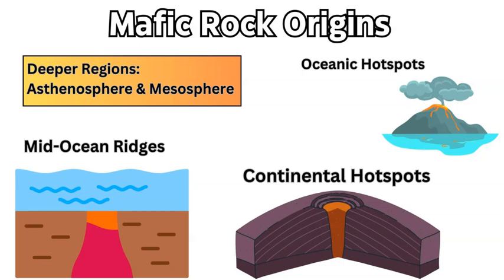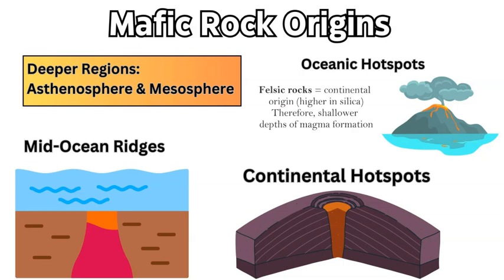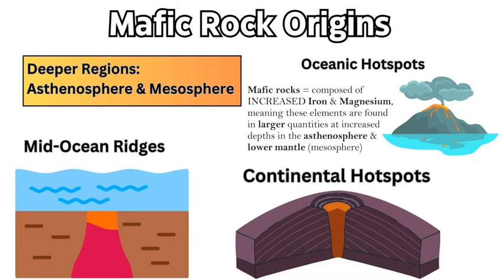Mafic rocks have a specific origin due to their composition and characteristics. Felsic rocks are mostly continental-based, derived from rock melting in and around the continents with higher silica content. However, mafic rocks derive from deeper in the Earth's mantle — in the upper mantle, in the asthenosphere, in the low velocity zone between 150 to 200 kilometers depth. They also derive from deeper in the mesosphere, or lower mantle, coming up through hotspot regions — continental hotspots, mid-ocean ridges with convection currents, or oceanic hotspots — erupting and flowing on the Earth's surface at various tectonic and hotspot locations.